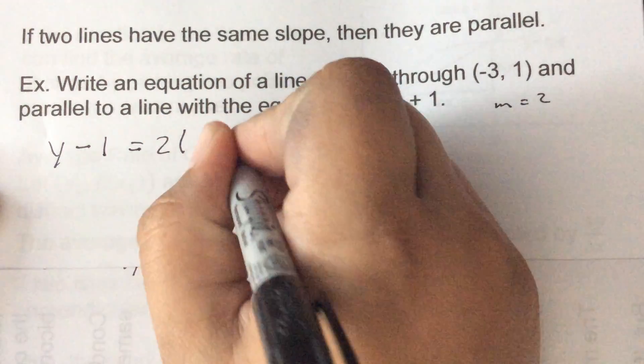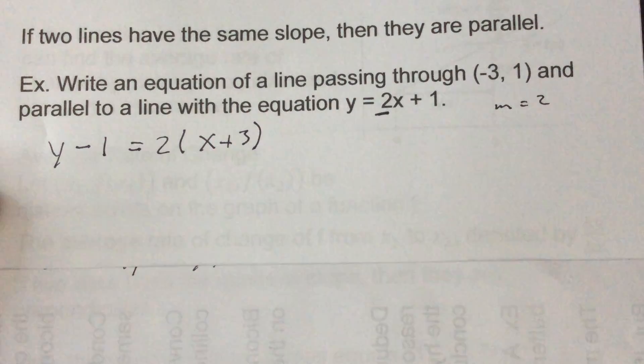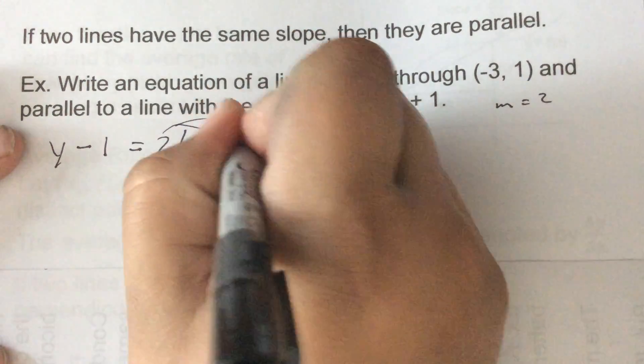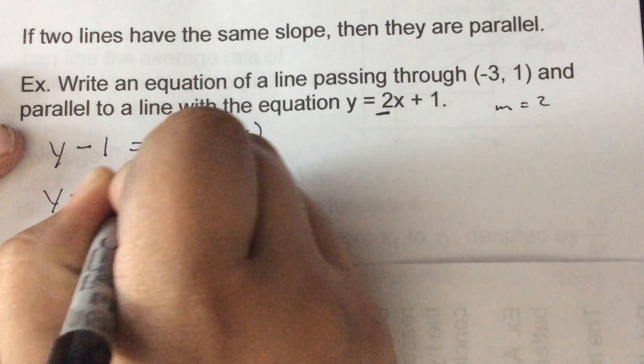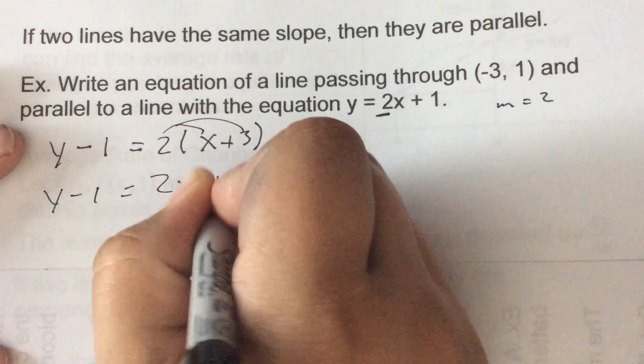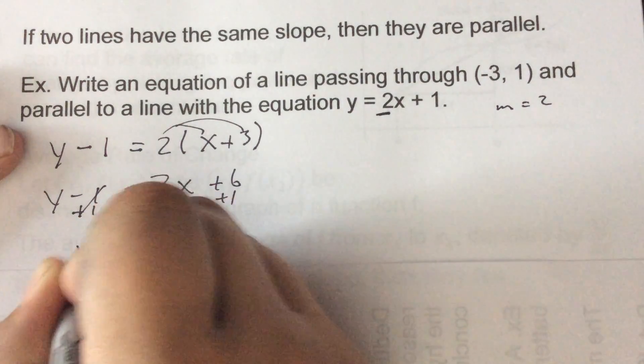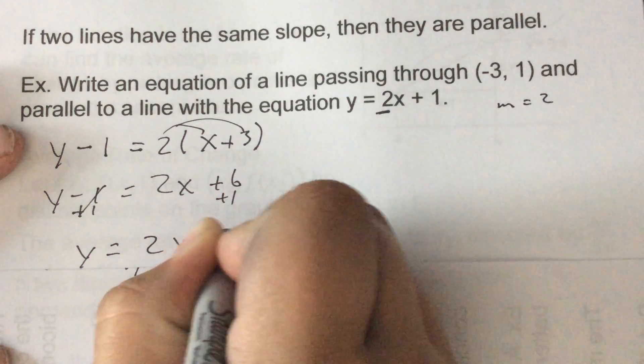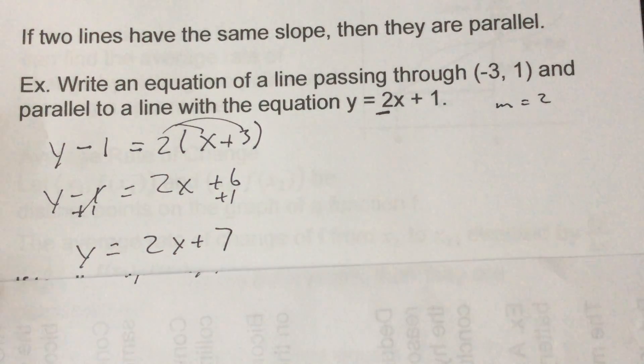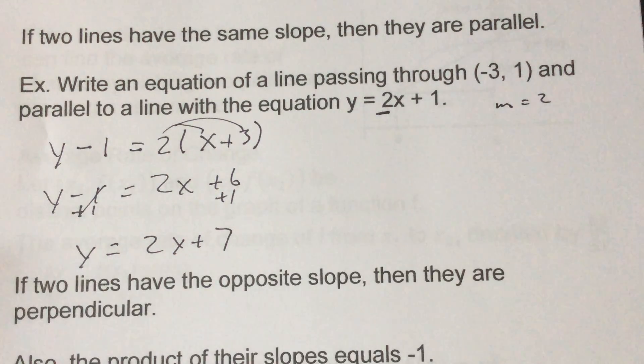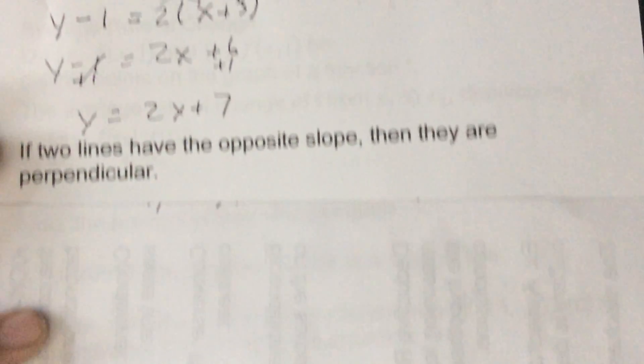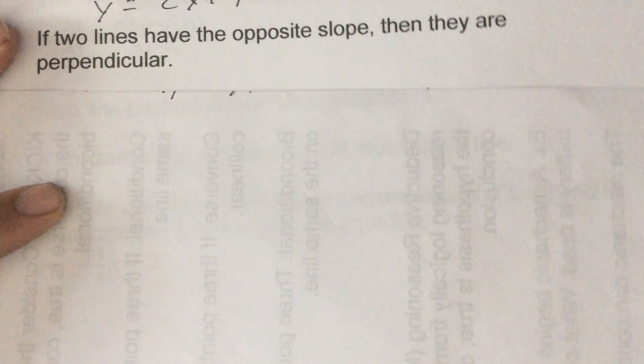Now if all it says is just write an equation that's it, but we're going to convert it over into slope intercept form. So we're going to distribute the two in, and so y minus 1 would equal 2x plus 6. Add the 1, so y would equal 2x plus 7 would be our equation as well.